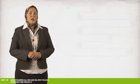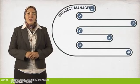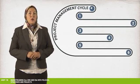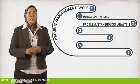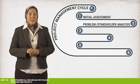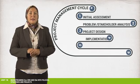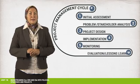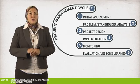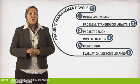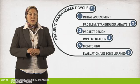A third entry point for ECODRR is development projects at all phases of a project cycle — from initial assessment, problem and stakeholder analysis, to project design and implementation, monitoring, and evaluation. For example, at the national level, EIAs, which are normally mandatory for most larger development projects, can be required to include a risk assessment component. Remember, we discussed this in Unit 14.